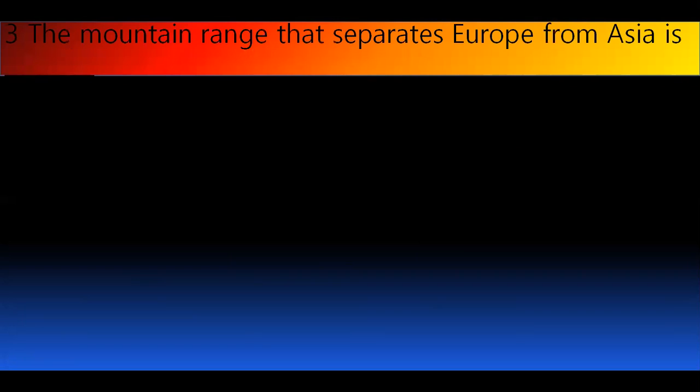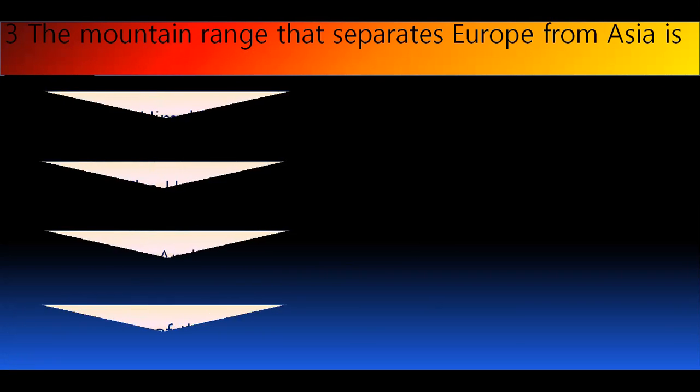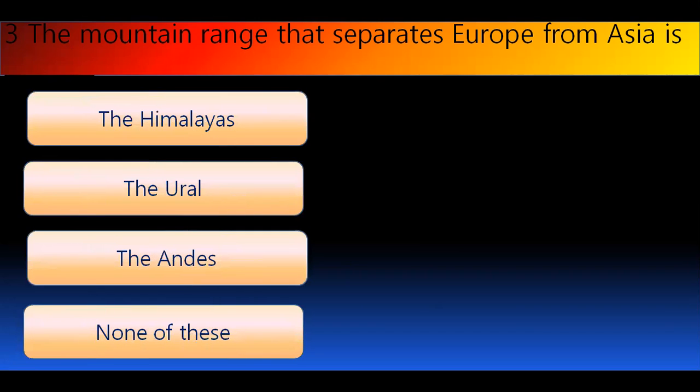Question number 3. The mountain range that separates Europe from Asia. This is the mountain range that separates Europe from Asia. Options are Himalaya, Ural, Vendi, Niladiri. And the right answer is Ural.